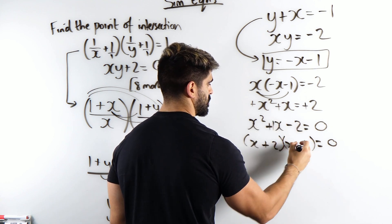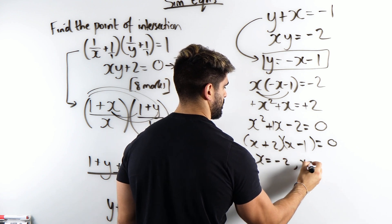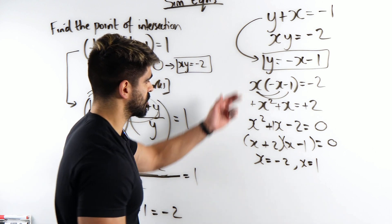Factorize x and x and then we're going to get 2 and 1. How do you make plus 1? You have plus 2, minus 1. So x is minus 2, x is 1. Now we can just go back to this.